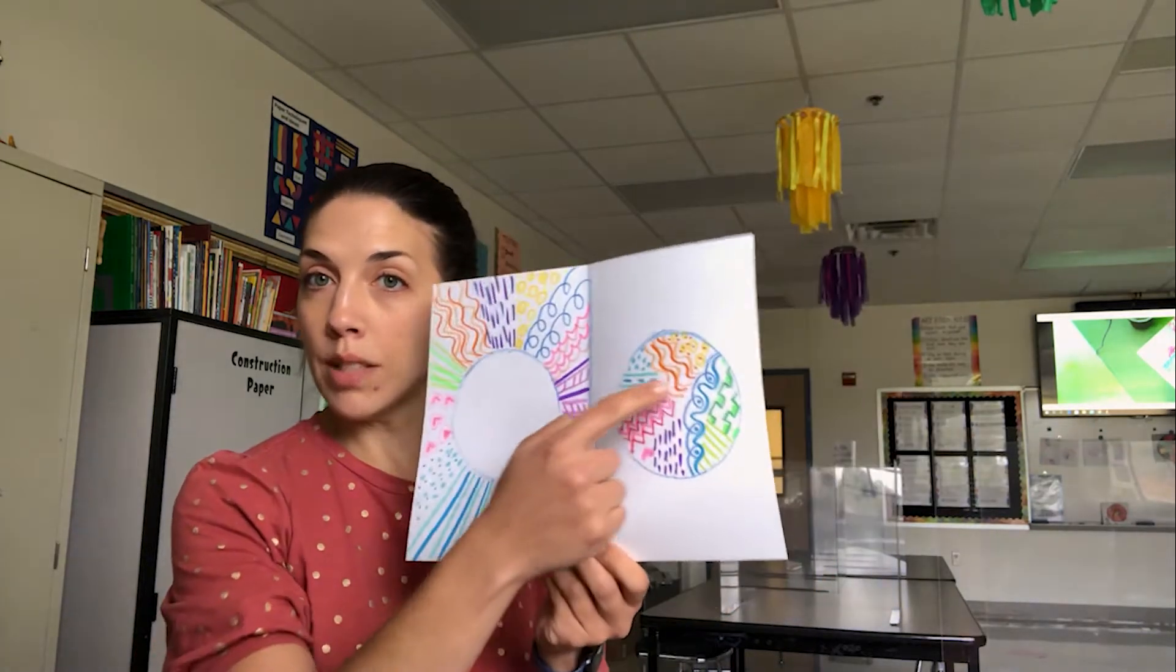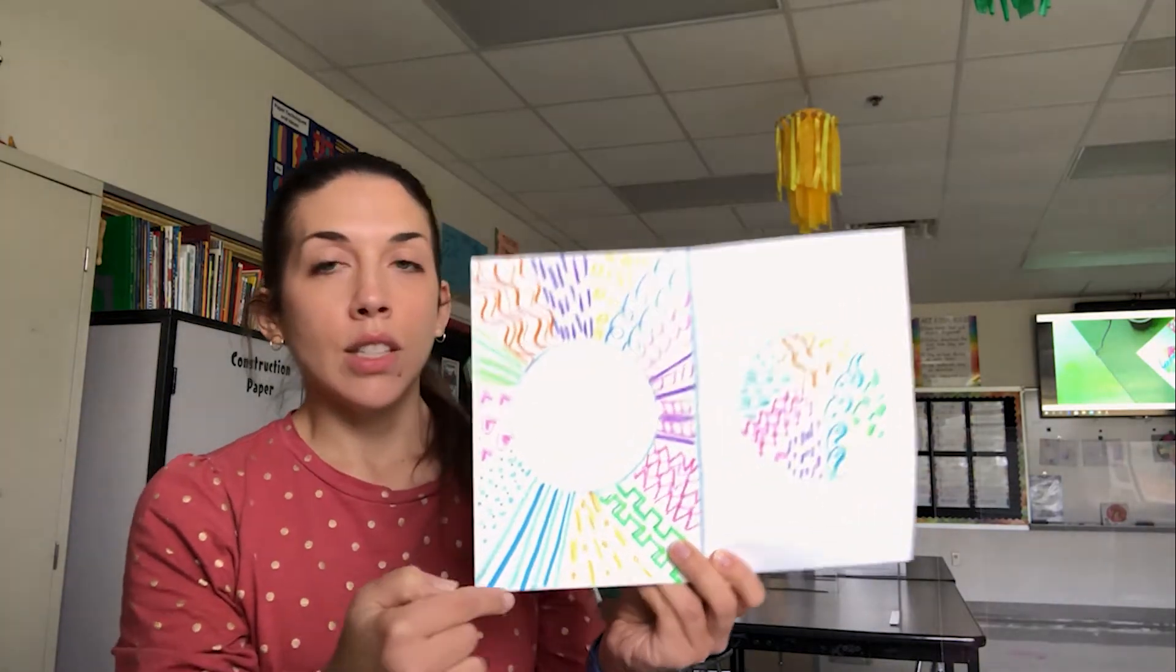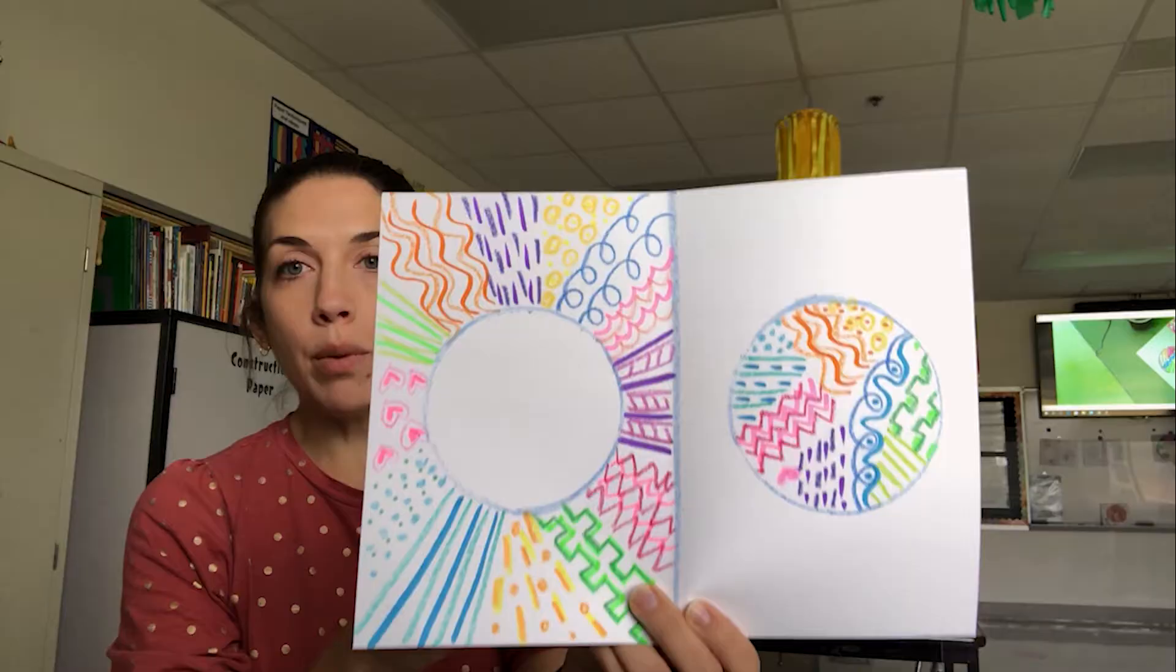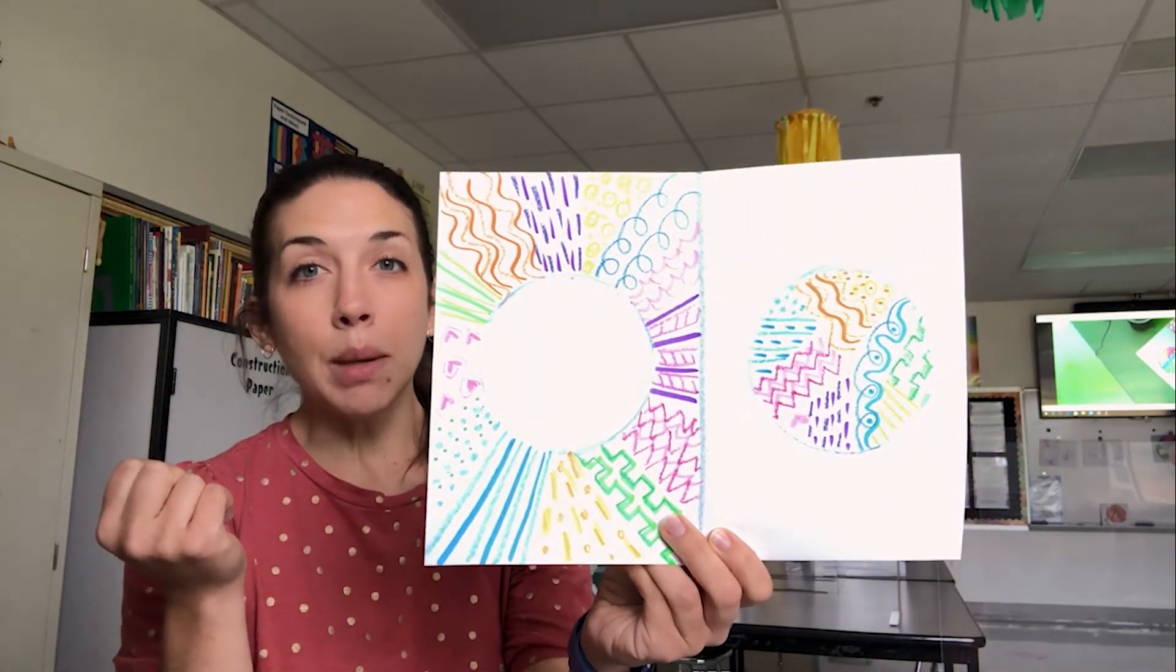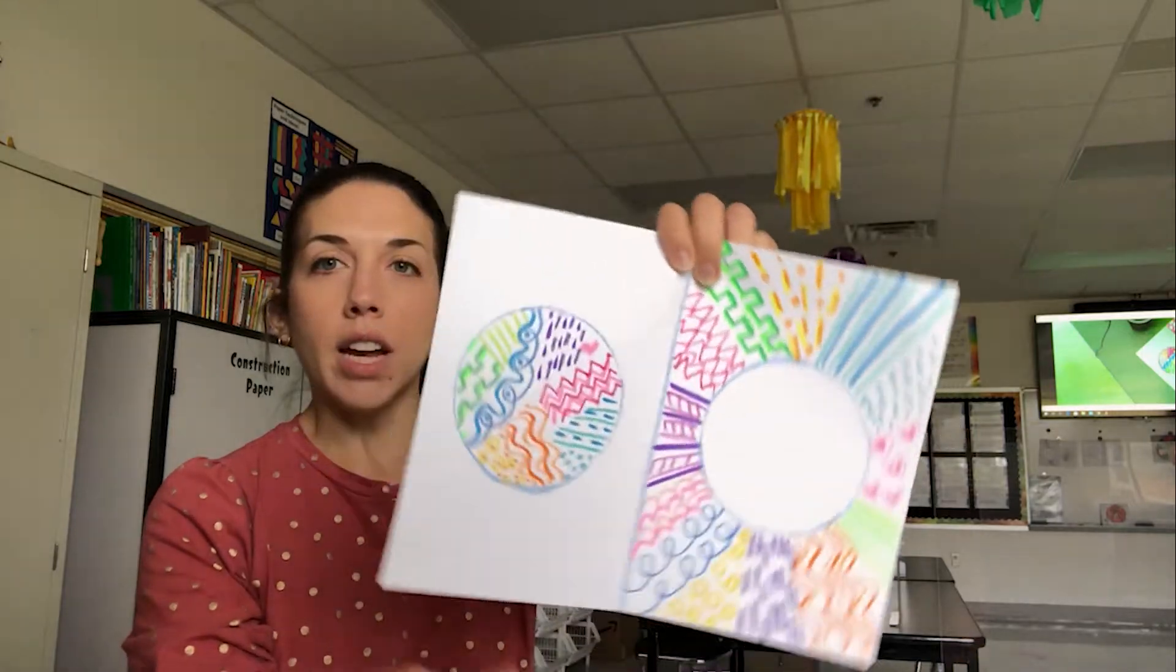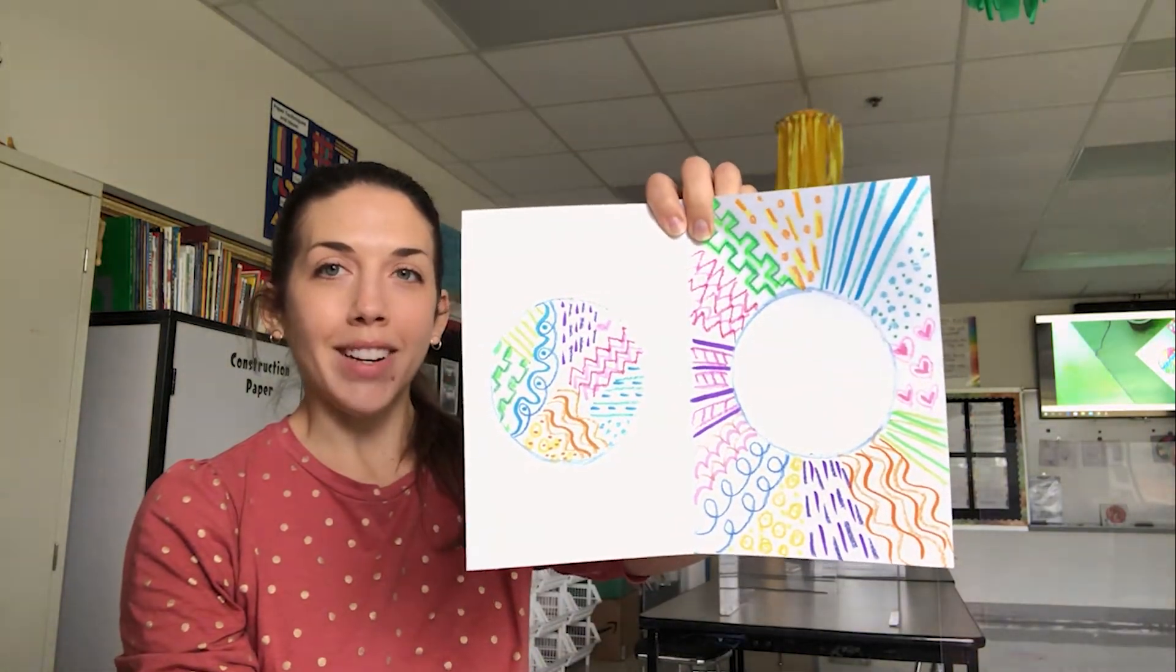So we are making some positive space dots today and negative space dots. I want to show you how to separate your paper into two parts. We're going to fill it with all kinds of line designs and patterns, so you're going to end up having a very colorful Dot Day project when you're done.